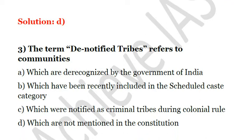The next question: the term 'denotified tribes' refers to communities — A. Which are de-recognized by the Government of India. B. Which have been recently included in the Scheduled Caste category. C. Which were notified as criminal tribes during colonial rule. D. Which are not mentioned in the Constitution. Denotified tribes are those tribes which were described as criminal tribes during colonial rule, so the answer is C.